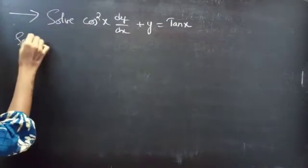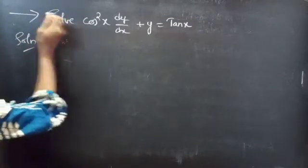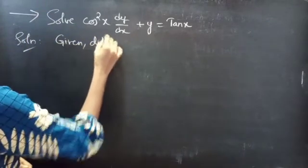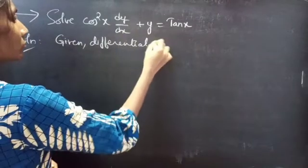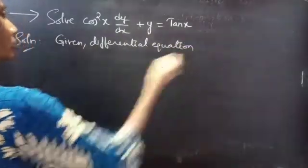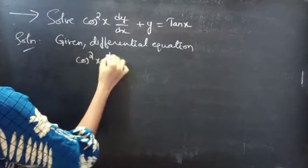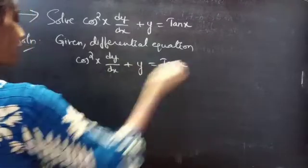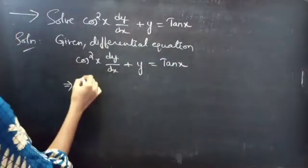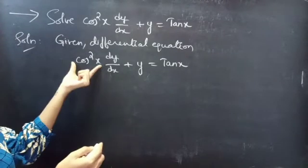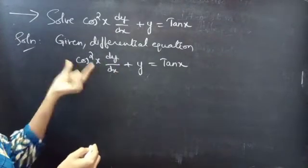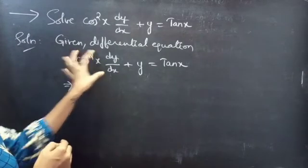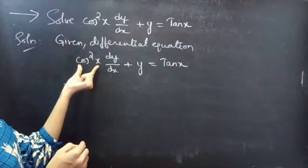Solution. Given differential equation: cos²x · dy/dx + y = tan x. Again, write this as — here we are having the equation of dy/dx with cos²x. So, what we'll do is we'll simply make this coefficient equal to 1. In order to make this to 1, what we'll do is we'll just divide the whole equation by cos²x.